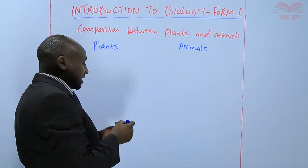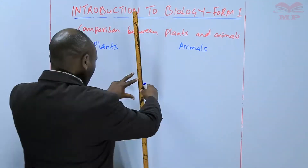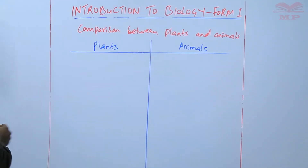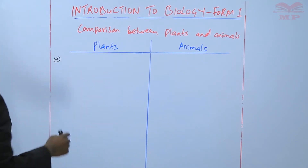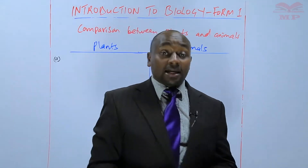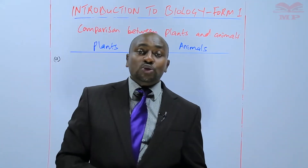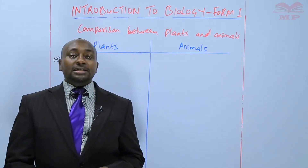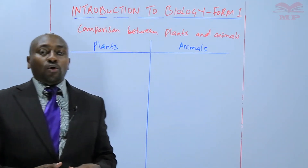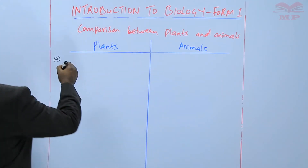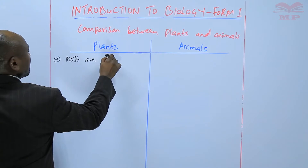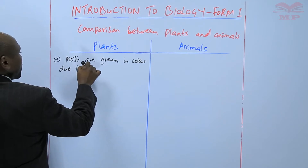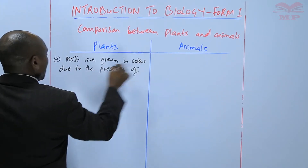We will present this comparison in the form of a table. For plants, most plants are green in color, and they are green because of the presence of chlorophyll. That chlorophyll is very important during the manufacture of food, what is called photosynthesis. So we are saying that most plants are green in color due to the presence of chlorophyll.